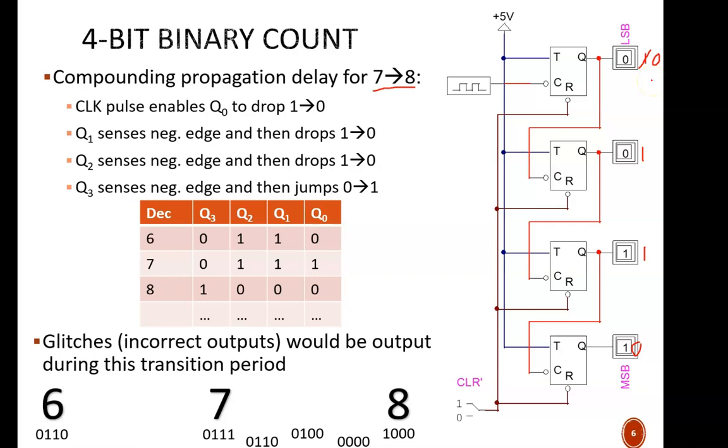That drop from 1 to 0 triggers the next flip-flop, which in turn toggles from 1 to 0. Now, briefly, the count reads 0, 1, 0, 0.